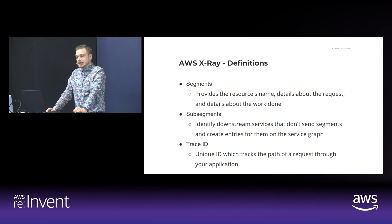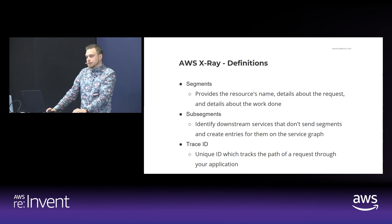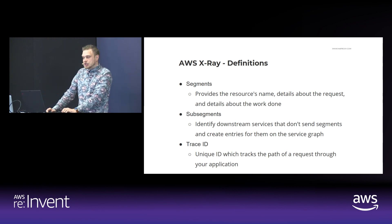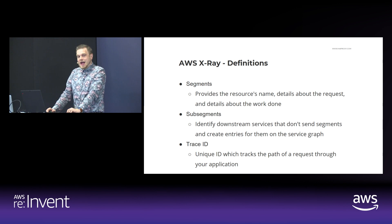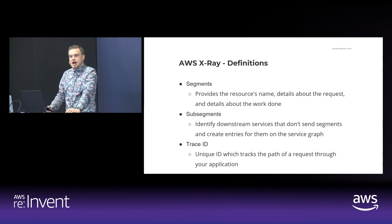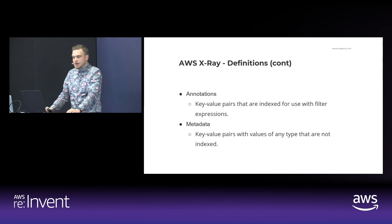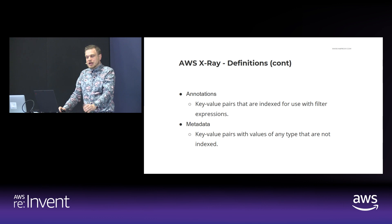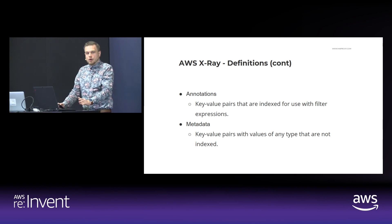Before we get into everything, I'd like to go over some AWS X-Ray specific definitions. A segment provides the resource name, details about the request, and details about the work being done. A segment can break down that data into sub-segments, which provide more granular timing information and details about downstream calls your application made to fulfill the original request. A trace ID is a unique ID which tracks the path of a request through your application. Annotations are simple key-value pairs indexed for use with filter expressions or searching. Metadata are also key-value pairs but can contain values of any type including objects and lists, but cannot be searched on or indexed.